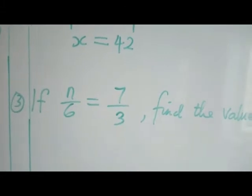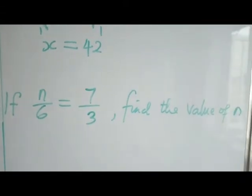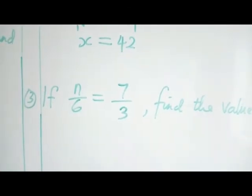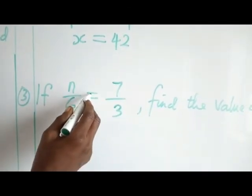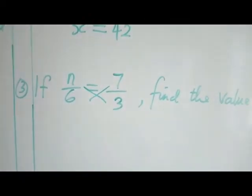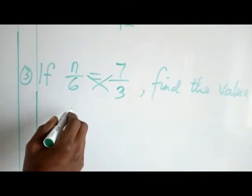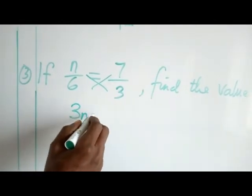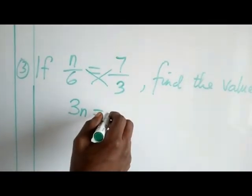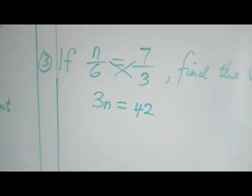Let's quickly look at example 3. Example 3 says, if n over 6 equals 7 over 3, find the value of n. You can see that example 3 and example 2 are very similar. You use the same method because we have an equal sign. A fraction equals another fraction, you cross multiply. Always start with the one that has the unknown. So 3 times n is going to give us 3n, which equals 6 times 7, which is 42.